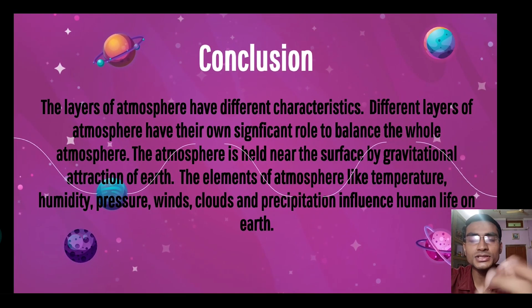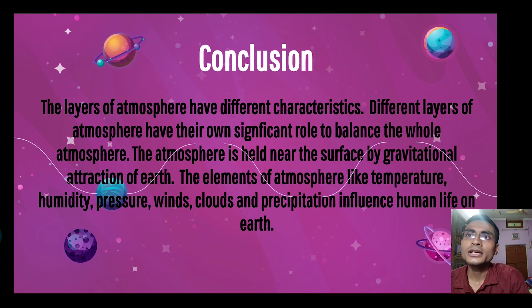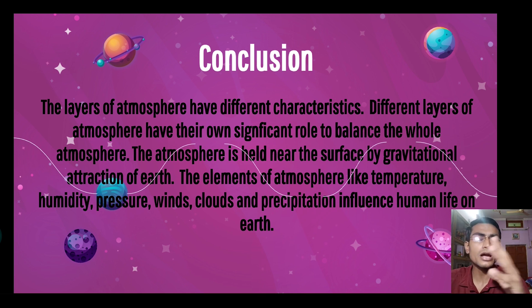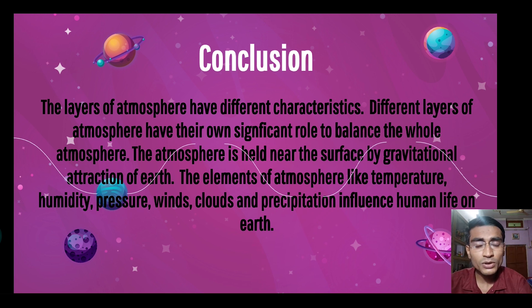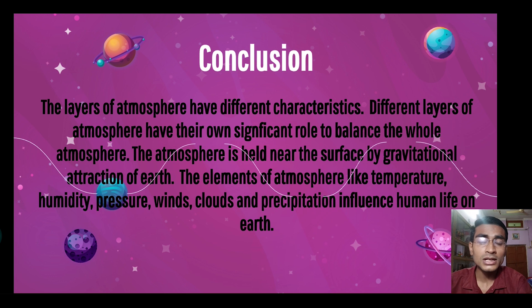The layers of the atmosphere have different characteristics, so each layer has its own significance. For example, ozone depletion protection occurs in the stratosphere, jet streams travel in the stratosphere, and supersonic travel also takes place in the stratosphere.